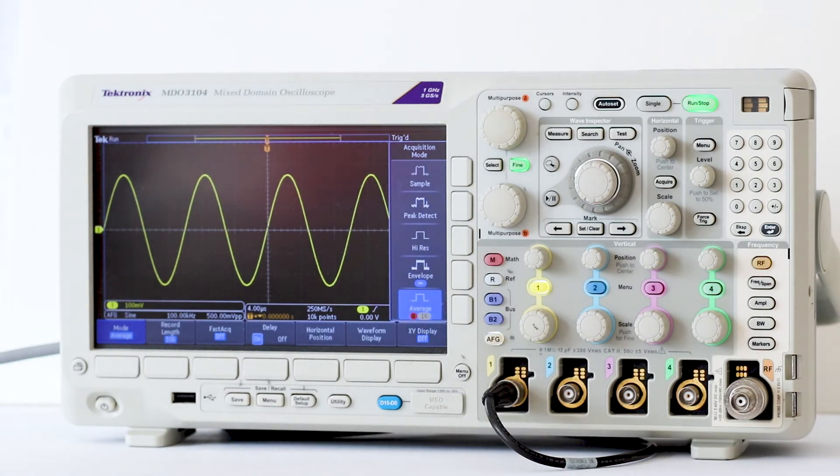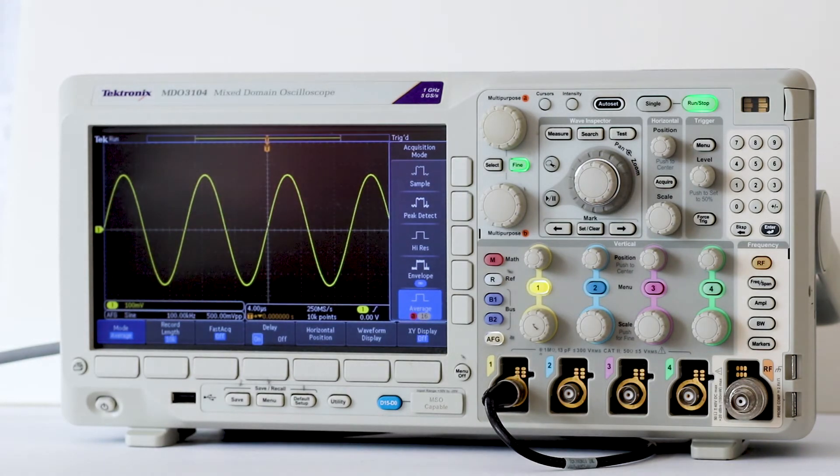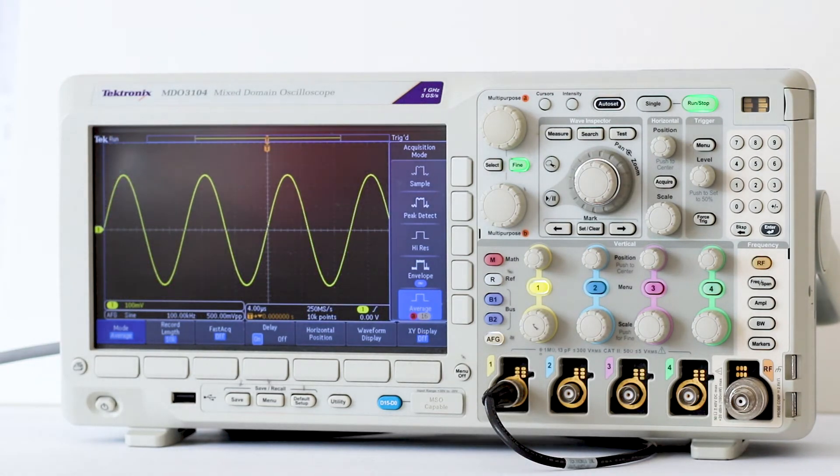As you can see, there isn't much difference in the appearance of the sine wave in each of these sampling modes. That is because of its spectral purity. But look at the difference when we display noise, which is a random high bandwidth signal.